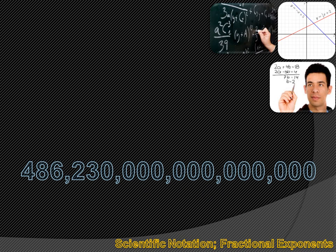Here's a really, really big number — I don't even know what it represents, but it's just too big to read. Let's put it in scientific notation so it's easier to deal with. Right now the decimal is all the way over on the right, and to get it into scientific notation we need to move it all the way to the left, so it's between the 4 and the 8.